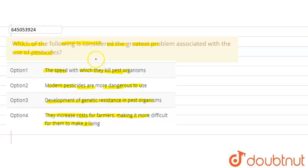So 4 options have been given. Which is the greatest problem that will show or represent the problem associated with the pesticides? What are the pesticides? First of all, let's look at these.